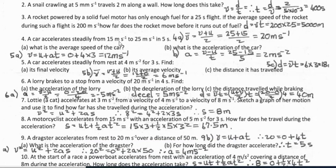Question 4: a car accelerates steadily from 15 meters per second to 25 meters per second in 5 seconds — what is the average speed? Average speed equals final speed plus initial speed divided by 2: 25 plus 15 divided by 2 gives 20 meters per second. The acceleration is 25 meters per second squared.